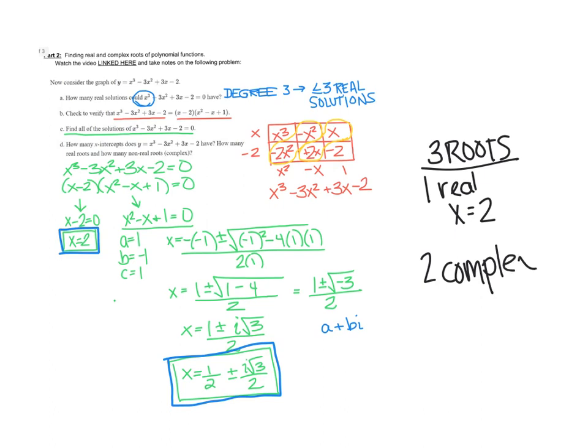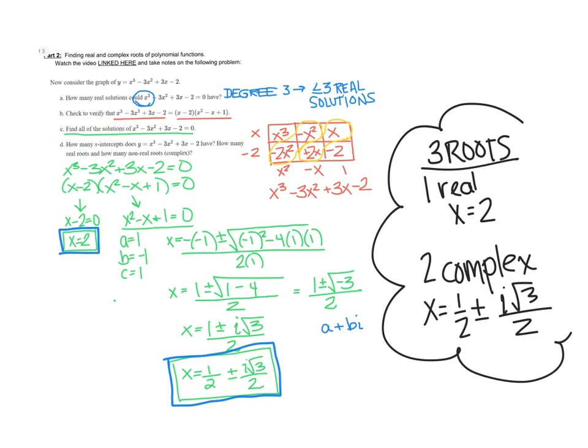And those two complex roots are at x equals one half plus or minus i root 3 over 2. We were expecting 3, and we found all three. If we looked at the graph, we would see an x-intercept at x equals 2. And the other roots, we wouldn't see any x-intercepts for those.